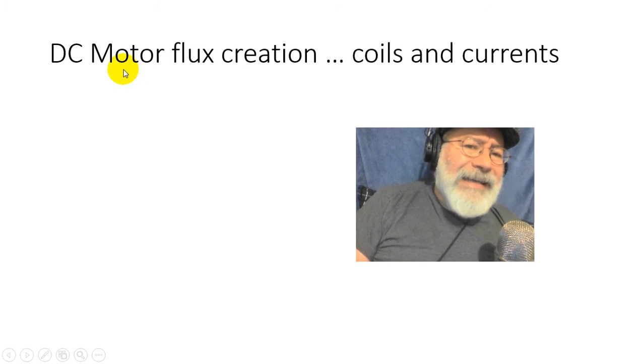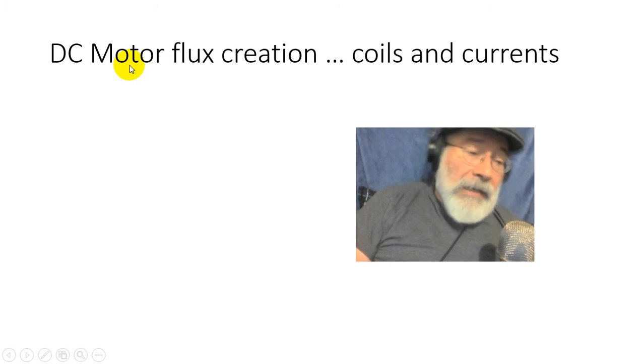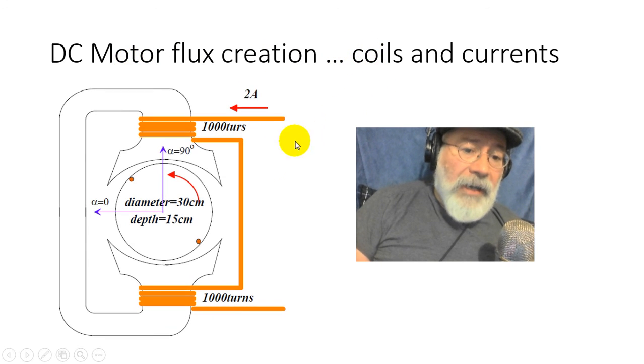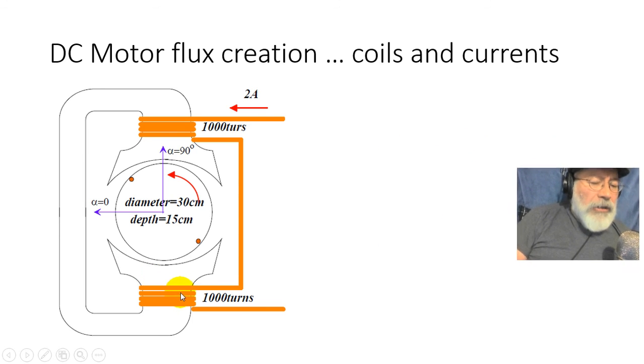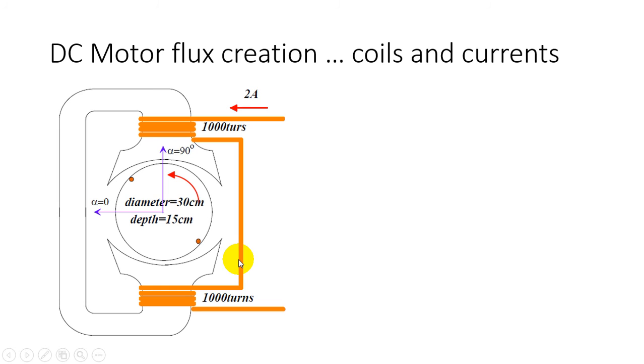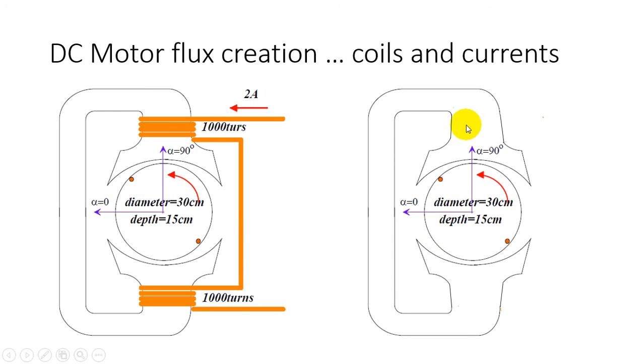Now how do we create the flux in a DC motor? Normally in our classes we've done that with coils and currents this way. We have these 2000-turned coils being split into halves, 1000 turns on the top and 1000 turns on the bottom, and the current of two amperes flowing through them, creating a magnetic flux in the air gap. But let's replace all those coils by a permanent magnet. Remove the coils like so on the figure on the right, and then in the middle of the magnetic circuit we include our permanent magnet. That magnet will create the flux in the air gap. The rest of the machine's behavior is as seen in class.